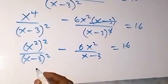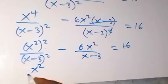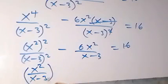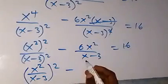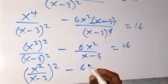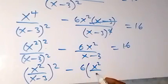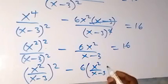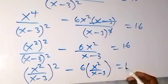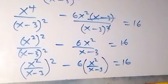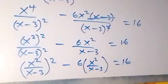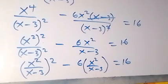This will become (x² / (x - 3))², minus 6 times (x² / (x - 3)), which is equal to 16. From here, we have x² over (x - 3) as a common expression, and we can use a letter to represent that.